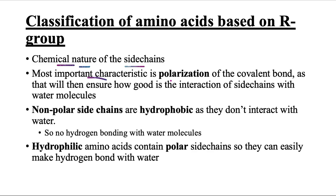One of the most important characteristics of the side chain is the polarization of the covalent bond, as that polarization will determine how well side chains interact with water molecules. If two atoms bonded by a covalent bond differ in electronegativity, the more electronegative atom attracts the electron pair toward itself, generating a partial negative charge on it and a partial positive charge on the other atom. That polarization determines how well the bond interacts with water.